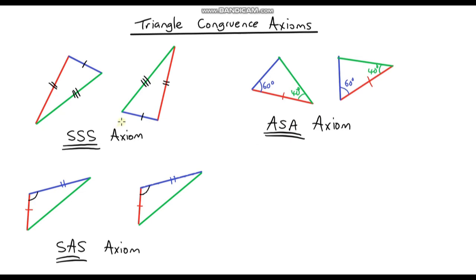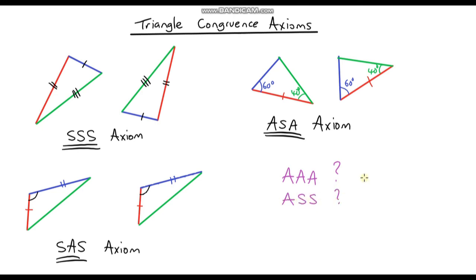Just to summarize what we've done so far: we've looked at three different scenarios of pairs of triangles with side lengths and angles that are the same. In the next video we're going to look at a couple more combinations, focusing on AAA — angle angle angle — to see if two triangles with the same angles are definitely congruent, and also the ASS scenario. Hopefully I will see you in the next video — take care.